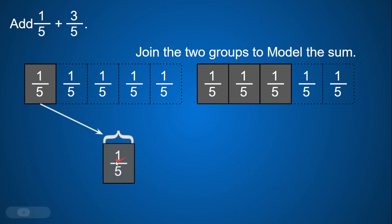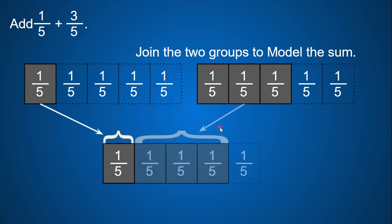So I'm going to put one-fifth down, and then I'm going to add these three-fifths to that one-fifth to give me a total of one, two, three, four-fifths.